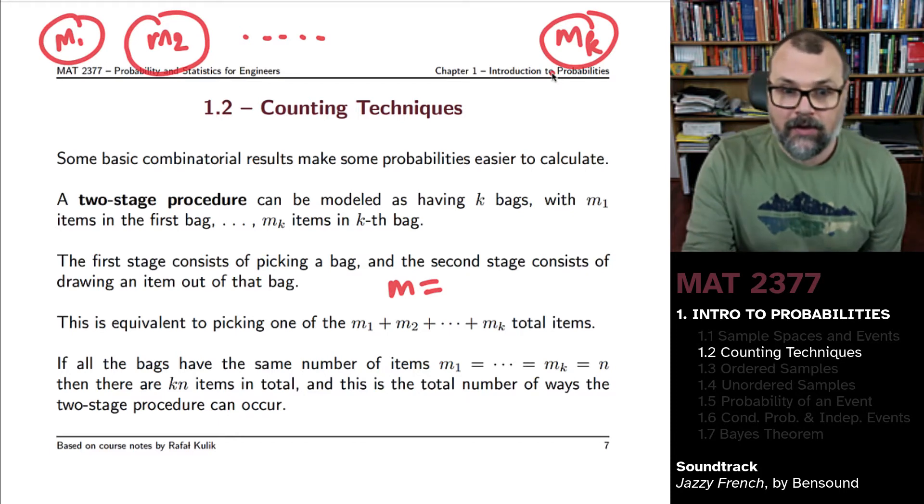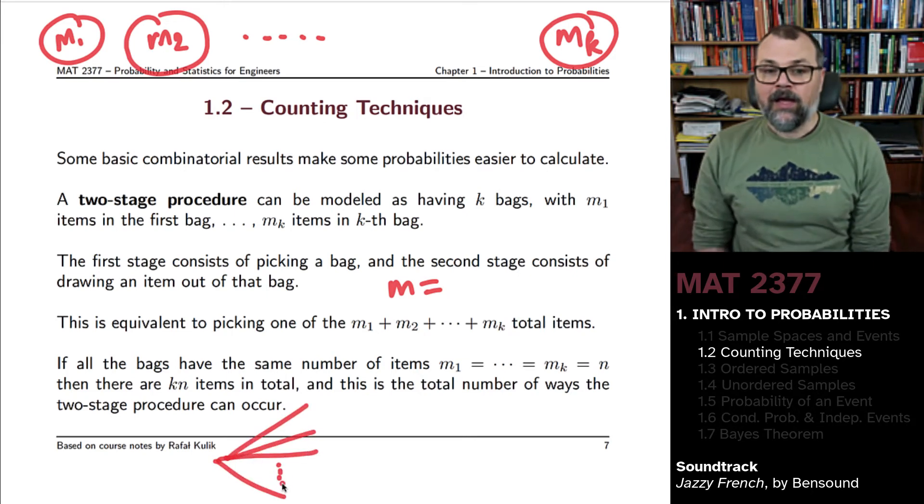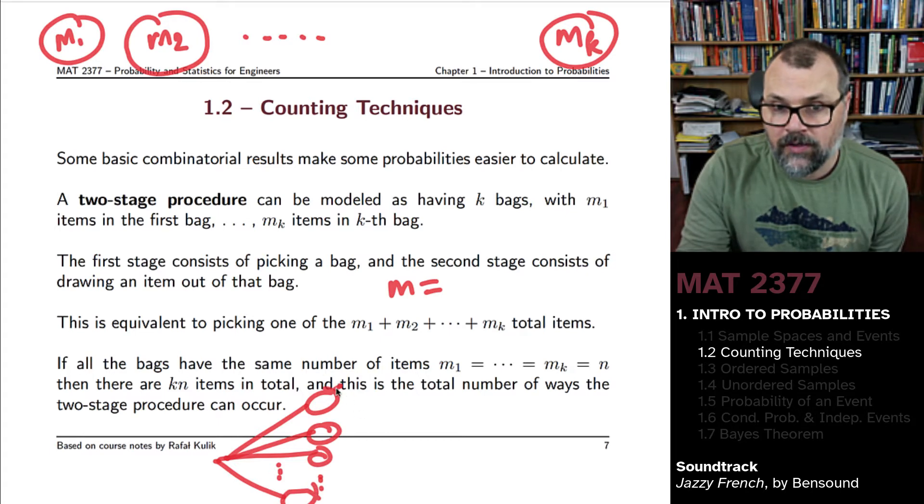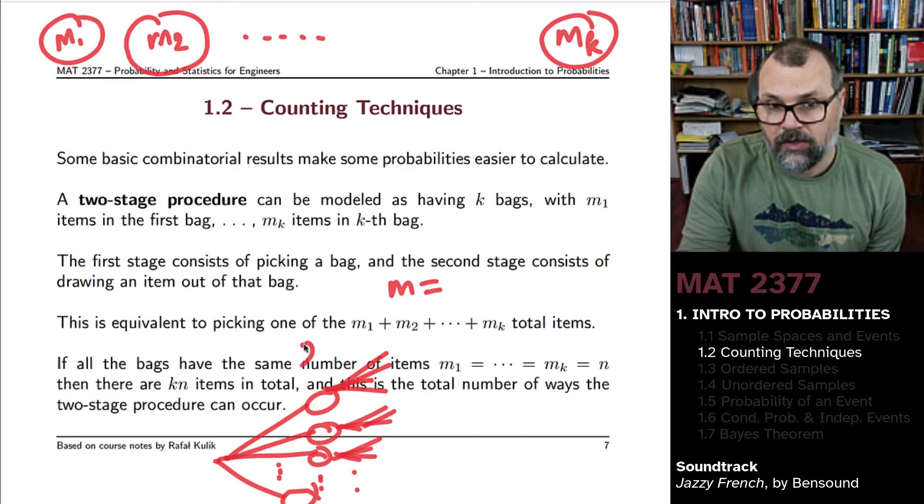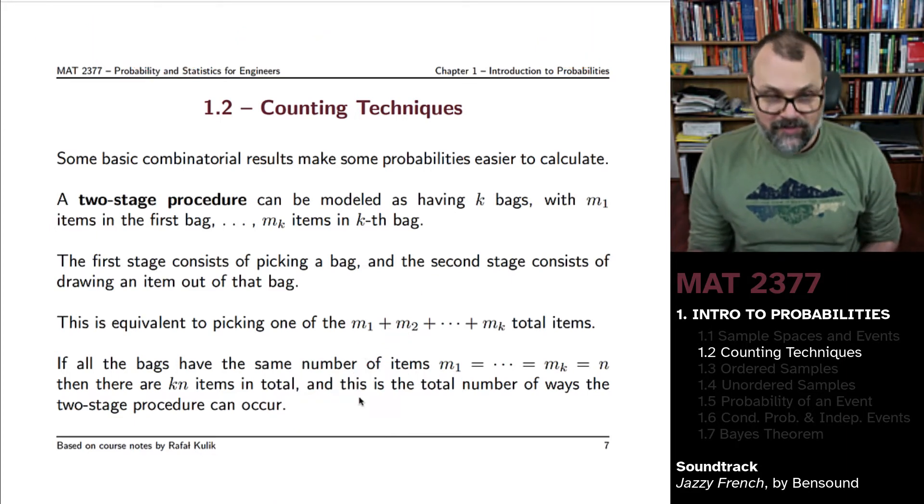Then the number of ways the two-stage procedure could occur would just be K times N. There are K ways to pick a bag, and within each of the bags that you've picked, there's going to be N ways to pick an item. So K choices here, N choices here, for a total of K times N.